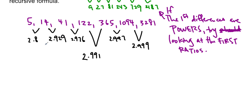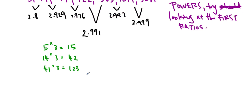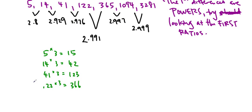So we're going to pretend that the first ratios are actually 3 and try seeing what happens with that. So if we start with 5 and we multiply by 3, we actually get 15. If we go with 14 and multiply by 3, we're actually going to get 42. 41 times 3, this is the original sequence, by the way, that I'm doing, is equal to 123. And 122, which is the next one, times 3 is equal to 366.